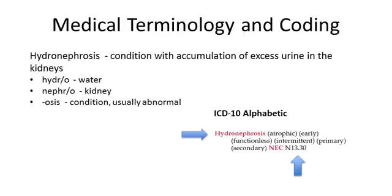Let's take a look at a few examples of medical terminology of the diagnosis and what it looks like in the ICD-10 Alphabetic Index. The first example diagnosis is hydronephrosis. The medical term is broken down into parts to help explain what the condition is. Hydro is water, nephro means kidney, and osis is the suffix that means a condition that is usually considered abnormal.